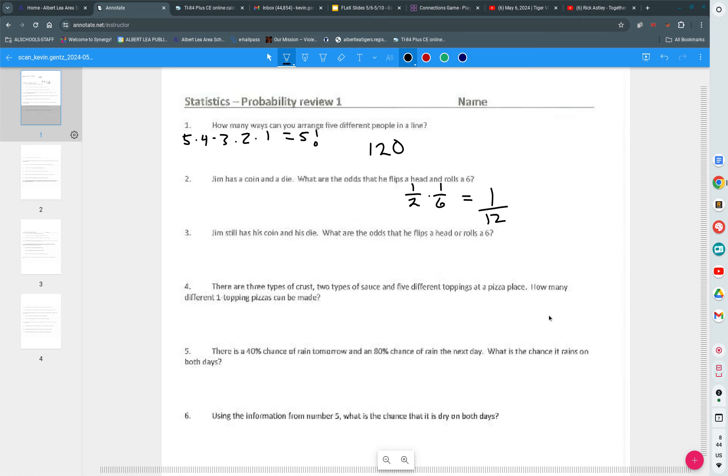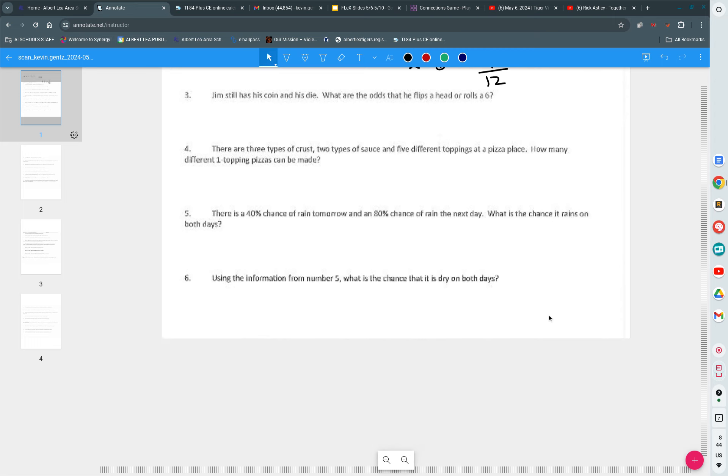Is the next question actually the exact same one? No, there's or instead of and. Good question. So now, instead of flips a head and rolls a six, he flips a head or he rolls a six. Either one of them happen. A little bit different scenario, right? Talk to the person next to you. See if you can figure out what we'd do in this situation.